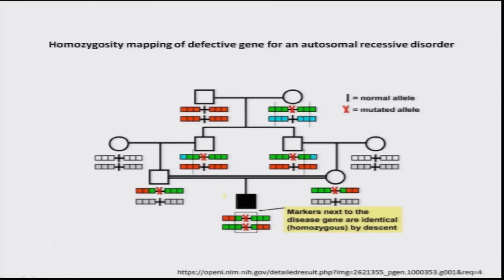Now let us see how the haplotype helps us to identify the gene. This is a schematic showing how you use these markers to identify the disease gene, using an autosomal recessive condition. You have a male and a female, and each box represents different alleles of given markers. Here is where the gene is located, and by tracking which alleles co-segregate with the disease phenotype, you narrow down the chromosomal region containing the defective gene.